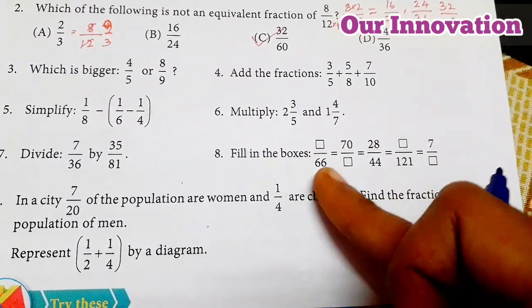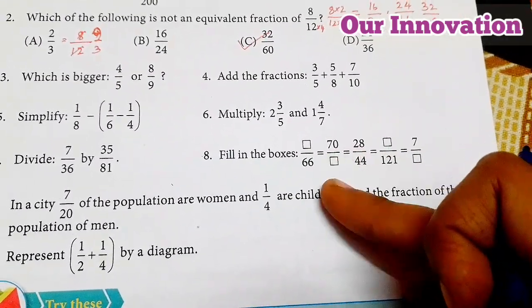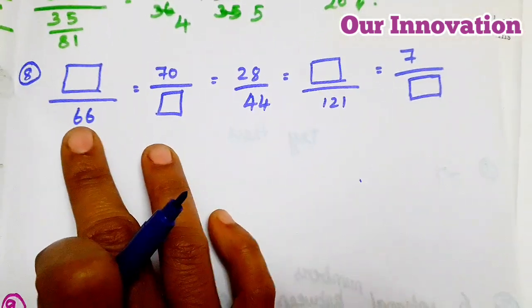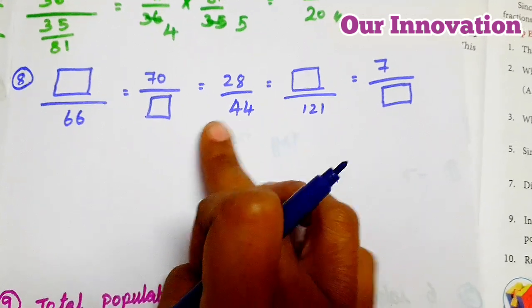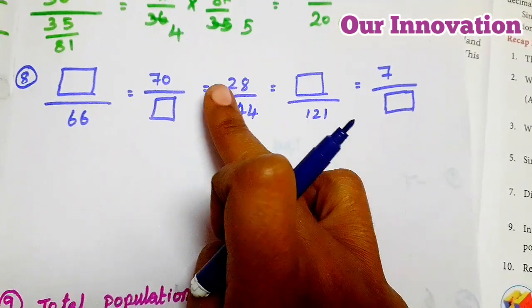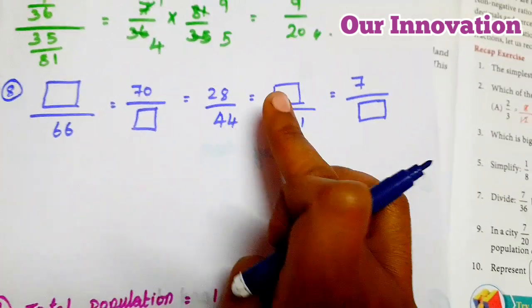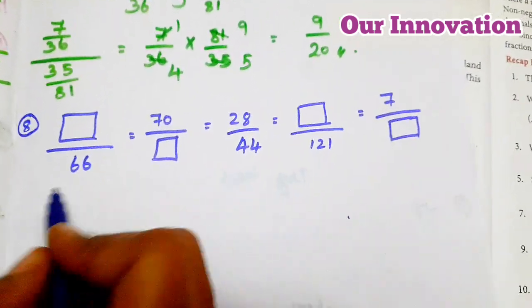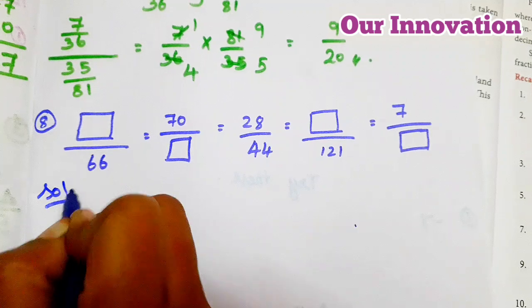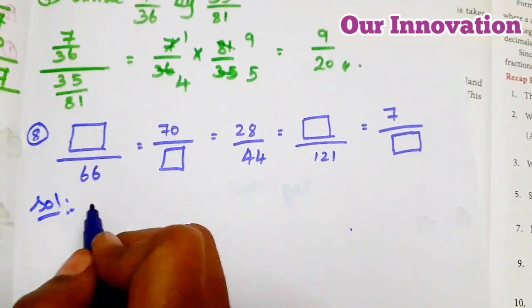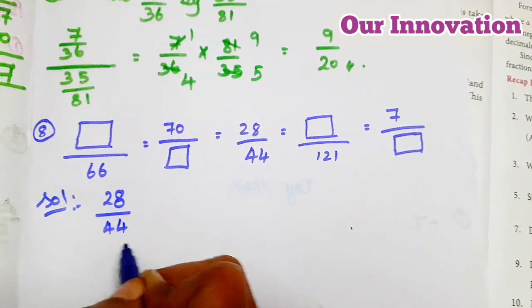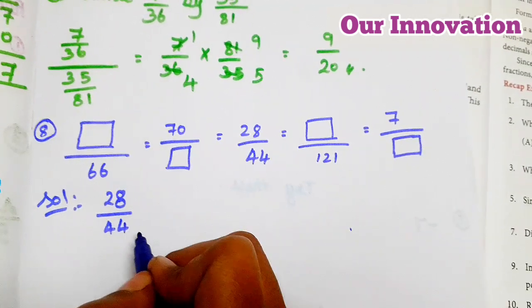8th one: fill in the boxes. Students, you can get fractions and fill in the boxes. Here we have boxes that are empty. The fraction is 28/44. We find the solution by cancelling using the 4 times table: 4 × 7 = 28, so 7. And 4 × 11 = 44, so 11. The simplified fraction is 7/11.